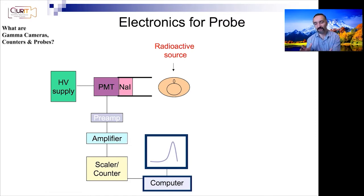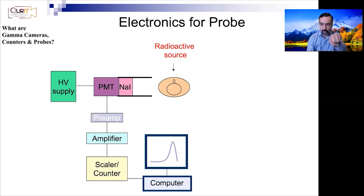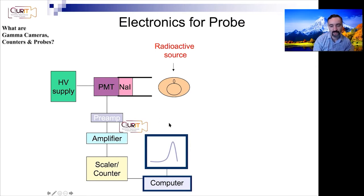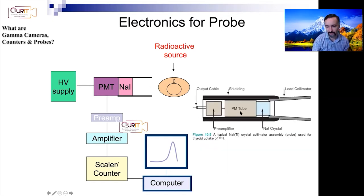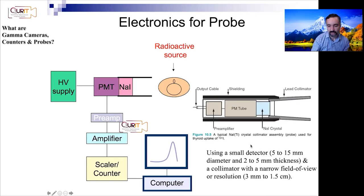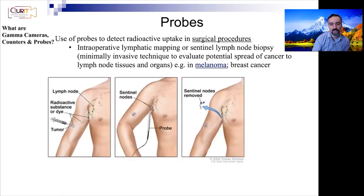Also, probes — often when we think about nuclear medicine we think about imaging, but another really great application is in surgical procedures. With probes it's not imaging; you move the probe around to see if there is a signal. It's a simple model and you don't have to do too much data processing because you're not doing imaging — it's just processing what's coming at that direction. You're typically using a single detector with a narrow field of view looking at the immediate vicinity.